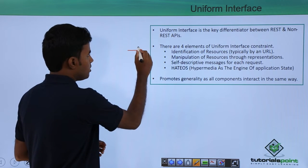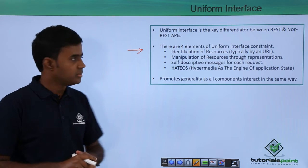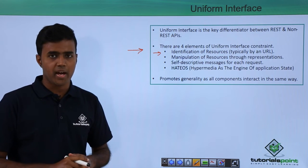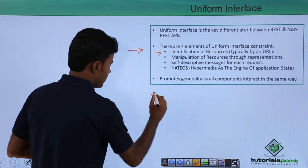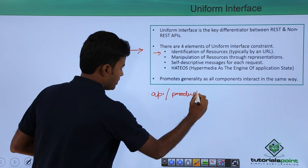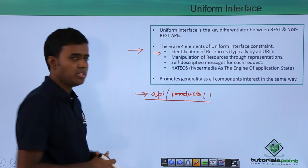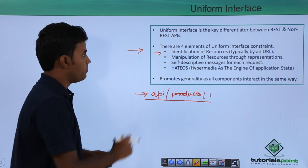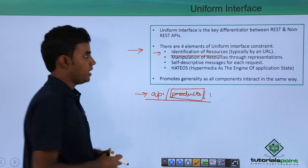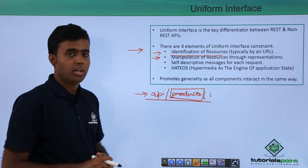There are four key elements to the Uniform Interface Constraint. The first one is the identification of resources, typically by a URI — for example, API slash products slash one. When you give a request to a URL like this, you are identifying the resources through a URI.